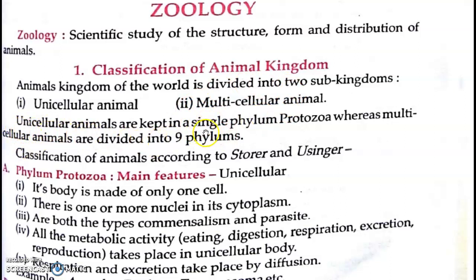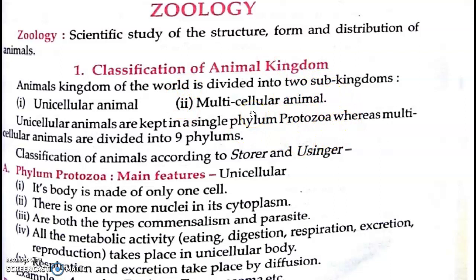Unicellular animals are contained in a single phylum, which we call phylum Protozoa. Whereas multicellular animals are divided into 9 phyla. So in the animal kingdom, the first sub-kingdom is unicellular with only one phylum — Protozoa — and the second sub-kingdom is multicellular with nine phyla.